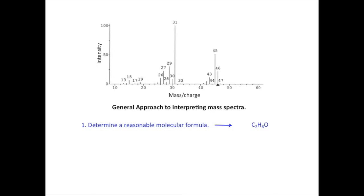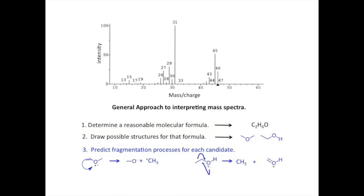Then, draw possible structures for that formula. Then, predict what fragmentation products will be produced for each candidate structure. Finally, look for evidence for the predicted fragments in order to decide which structure fits best. This lesson will concentrate on the first step.